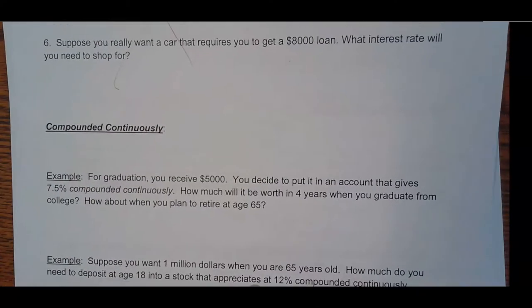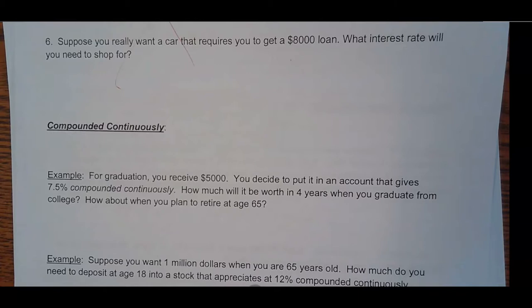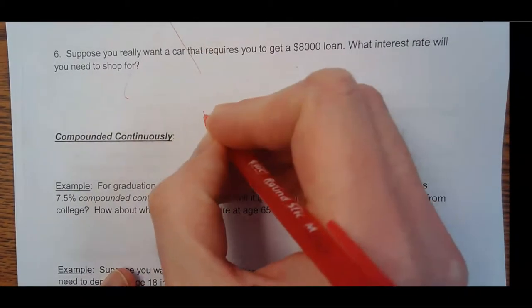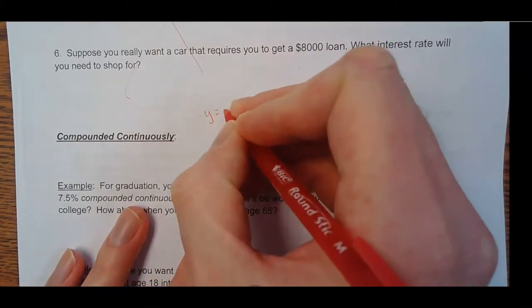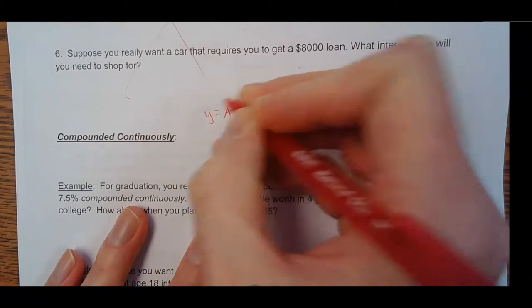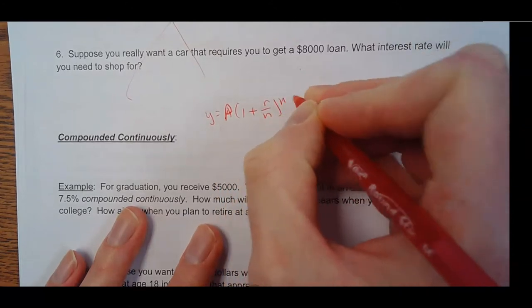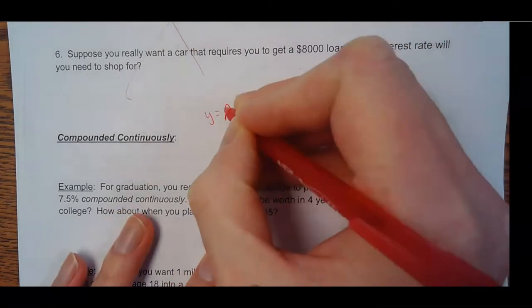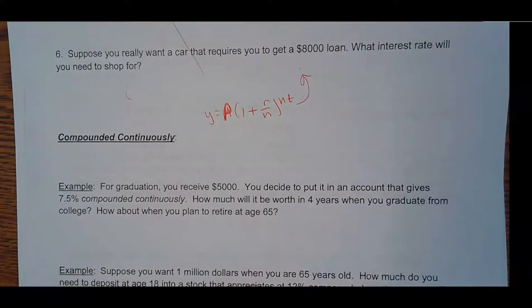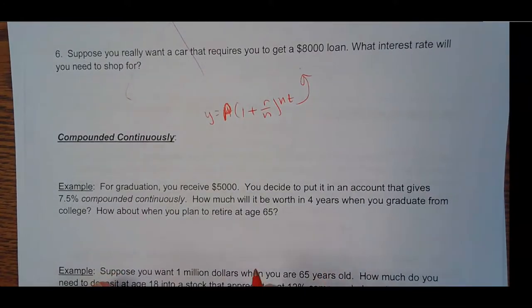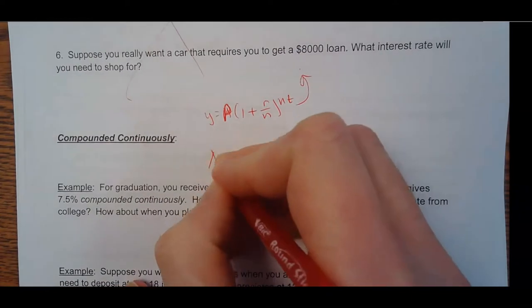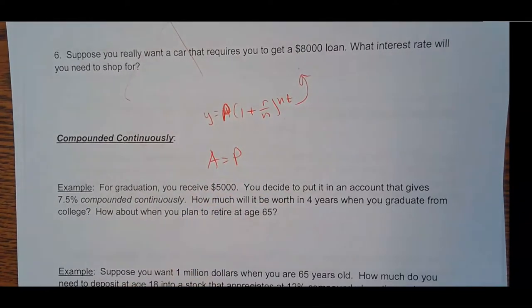So going back to your paper now, if we're compounding continuously, it's a slightly different formula. So instead of, you know, up here we use Y equals, and then it was the initial amount, 1 plus, or I should say P. P equals the initial amount, rate, divided by the number of compounds, N to the T. That's for compounding a number of times. Now if it's continuously, which is also known as exponential growth, they call it, it's growing exponentially, then the amount is going to equal your principal still.